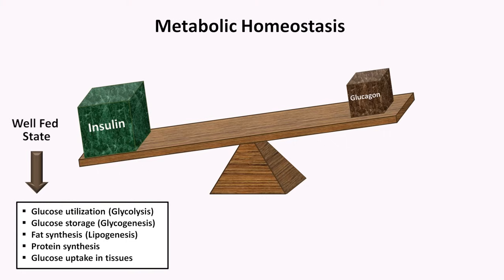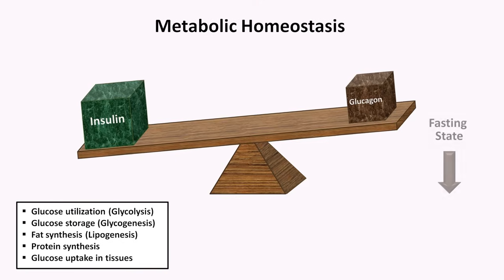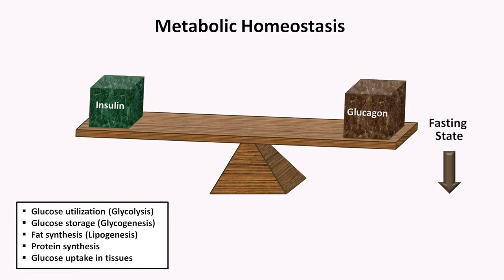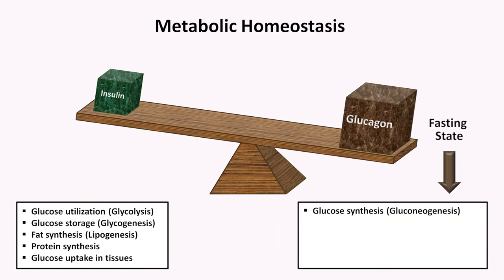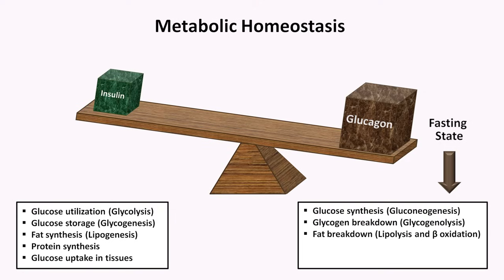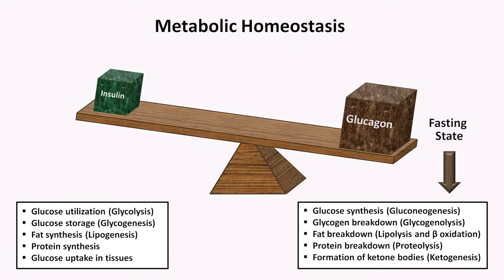These all make sense. When the body is well-fed and fuel and energy is abundant, of course your body should store excess energy. When the body is fasting, however, glucagon predominates. Its primary actions are glucose synthesis (gluconeogenesis), glycogen breakdown (glycogenolysis), fat breakdown from a combination of lipolysis and beta-oxidation, protein breakdown, and last, the formation of compounds called ketone bodies, which act as an alternate fuel source when glucose is in short supply.